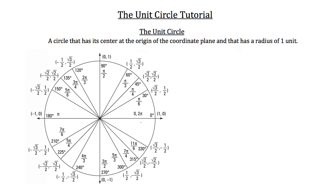The circle also has a radius of one unit. You can see that because the coordinate point for this point right here is (1, 0) — one to the right and zero up and down. This point right here has a value of (0, 1), so it's just one unit straight up. This coordinate point right here is (-1, 0), so just one unit to the left. And this point right here is (0, -1), so just one unit straight down. Those are all points on the outside of the circle, so they represent the radius of our circle, which is one.